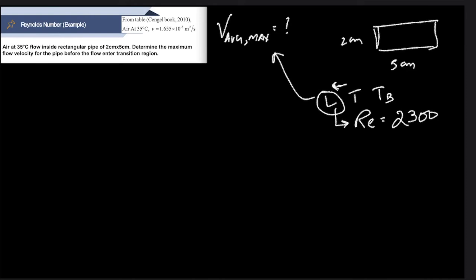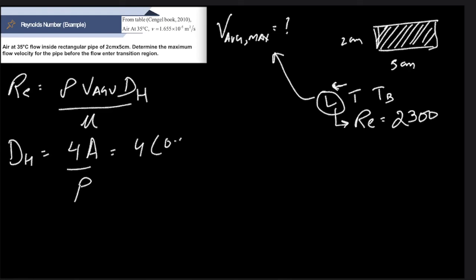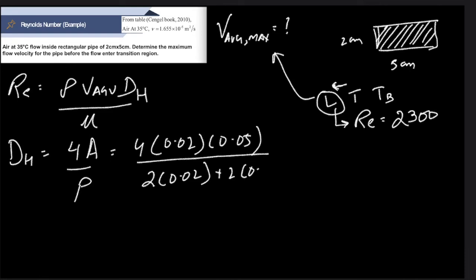Using Re = ρ·V_avg·D_h/μ, since this is a rectangle we must use the hydraulic diameter D_h = 4 × Area / Perimeter = 4 × (0.02 × 0.05) / (2 × (0.02 + 0.05)). The hydraulic diameter comes out to be 0.029 m.